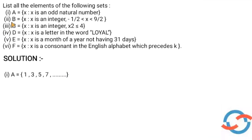Next question. B is equal to the set of all x such that x is an integer, -1/2 < x < 9/2. We want the integers here. -1/2 is -0.5, so 0 is our first element. 9/2 is 4.5, so 4 is the last element.